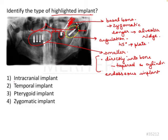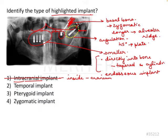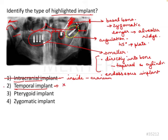Now let's have a look at the options. Intracranial implant — intra means inside, cranium means the skull bone. Is it going into the skull bone? Definitely not. Next is temporal implant, meaning going into the temporal bone. This is the temporal bone — as we know, TMJ is the temporomandibular joint, mandible is here, temporal bone is this. Is it going into the temporal bone? Most certainly not. So that is not an option either.